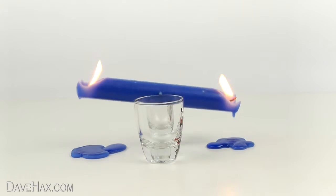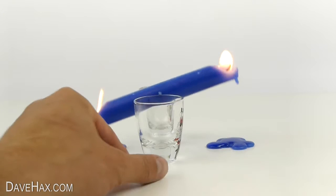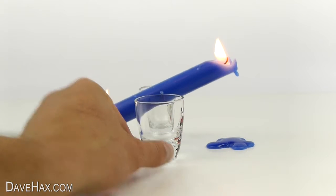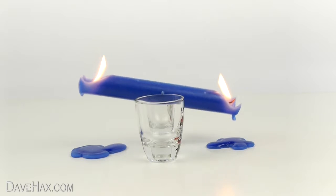To stop it happening again, you can push the glasses together so they're just squeezing the candle. This friction should slow it down and give you a more uniform seesaw.